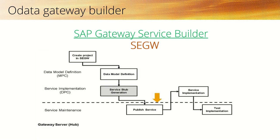Welcome back. Now we'll look at SAP Gateway Service Builder — the transaction code is SEGW. Just as we use SE38 for creating a program and SE11 for creating a table, similarly for development of OData service we use the transaction code SEGW.